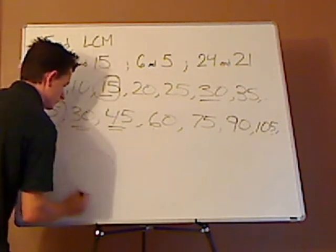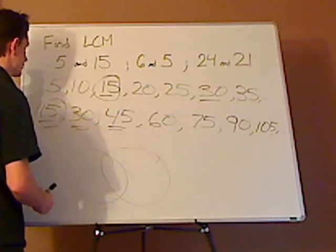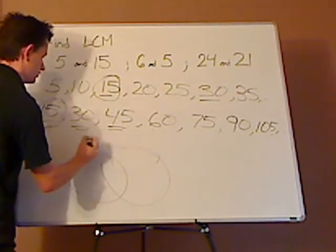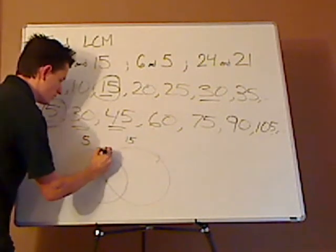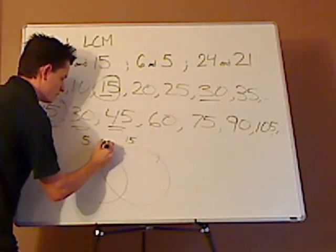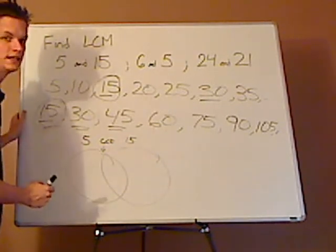You set up your Venn diagram, you have 5 and 15. Now, what goes into the middle is the overlap. That would be the GCF.